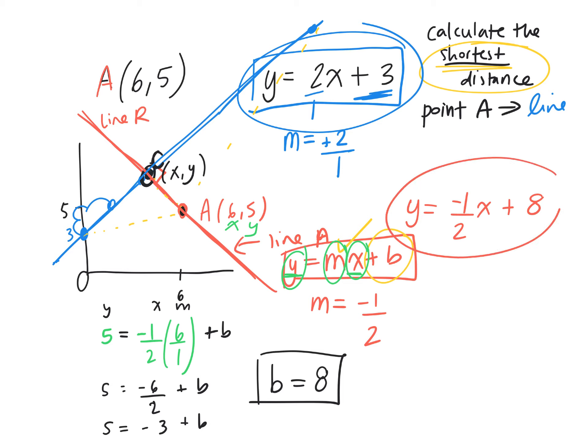So now I have the equation of the two lines. We're trying to figure out the point of intersection, because we know that's a point on the blue line. Then we can find the distance from that point to point A. We're trying to calculate the distance between those two points, the length of that line segment. So we need to find the point of intersection.